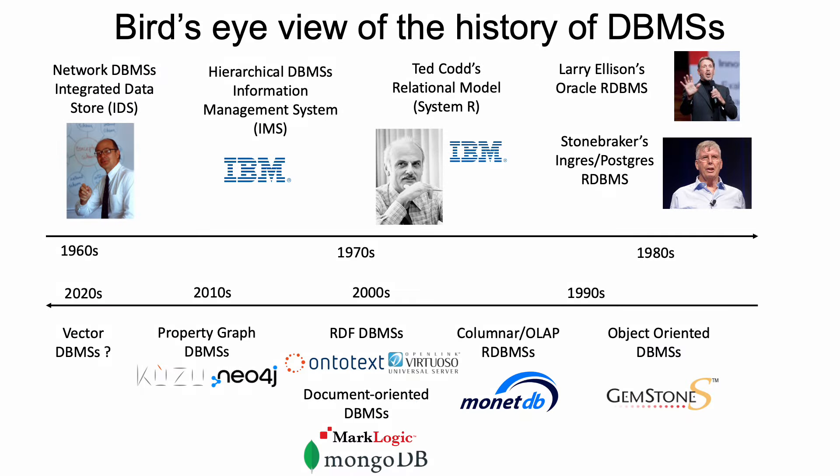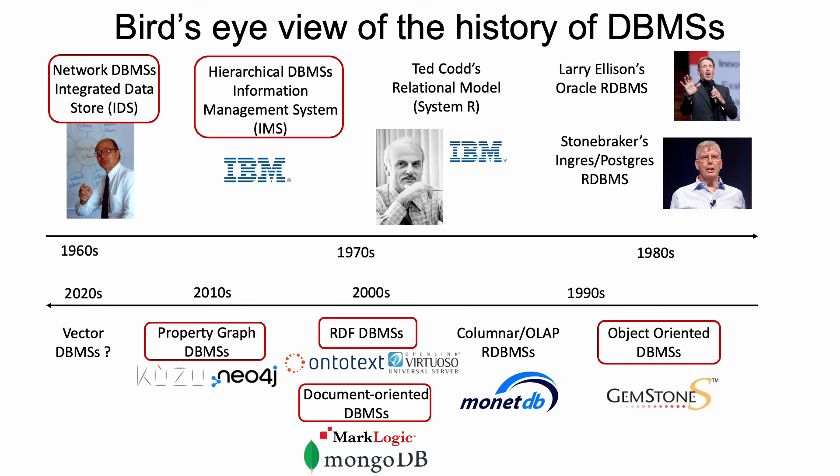In the next two videos I want to broaden the term graph database even more and use it to refer to several other classes of systems that also adopt some form of graph-based model and tell you about their history. In fact, six classes of database management systems can be considered as having an underlying graph-based model, all the way from the very first database ever built — the IDS system, based on the network model — to document-oriented systems such as the popular MongoDB, which adopt tree-based models.